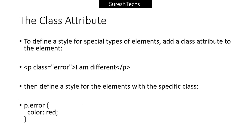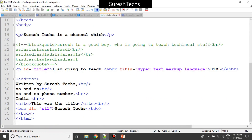Now we've seen the external style sheets and the ID attribute. There is one more attribute called the class attribute. Similar to ID, the class attribute is used to provide styles for a specific type of elements. For example, you have 10 paragraphs - it's not good practice to provide 10 different IDs. Instead you can use a single class and use that class name to provide the style.